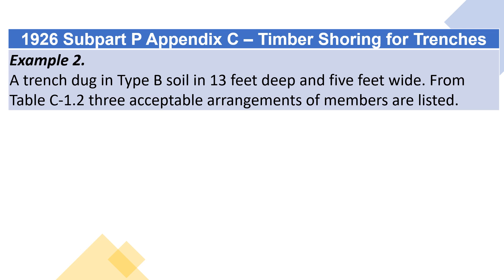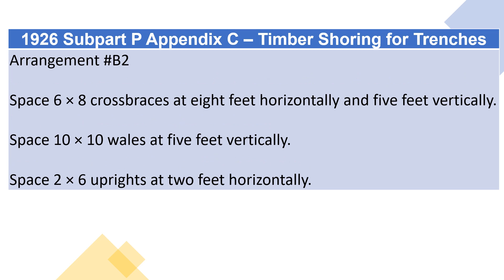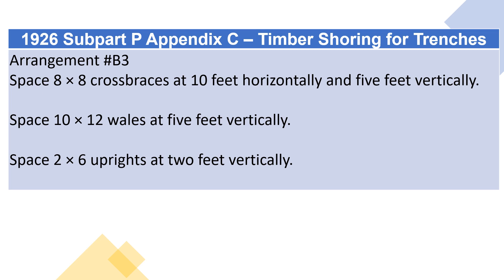Example 2: A trench dug in Type B soil is 13 feet deep and 5 feet wide. From Table C1.2, three acceptable arrangements of members are listed. Arrangement B1: space 6×6 crossbraces at 6 feet horizontally and 5 feet vertically. Space 8×8 whales at 5 feet vertically. Space 2×6 uprights at 2 feet horizontally. Arrangement B2: space 6×8 crossbraces at 8 feet horizontally and 5 feet vertically. Space 10×10 whales at 5 feet vertically. Space 2×6 uprights at 2 feet horizontally. Arrangement B3: space 8×8 crossbraces at 10 feet horizontally and 5 feet vertically. Space 10×12 whales at 5 feet vertically. Space 2×6 uprights at 5 feet vertically.